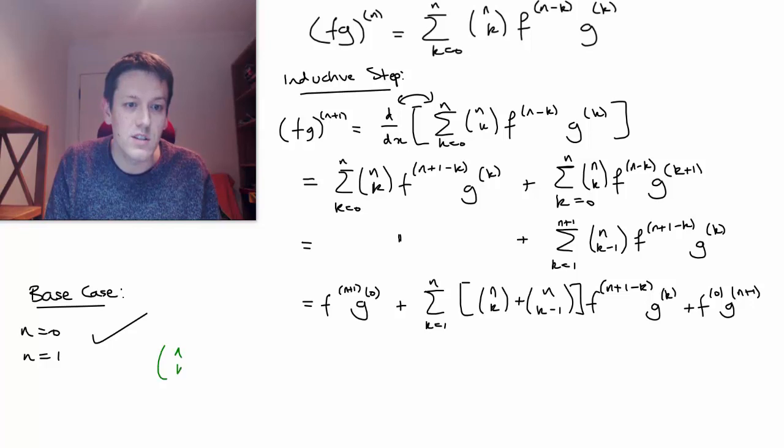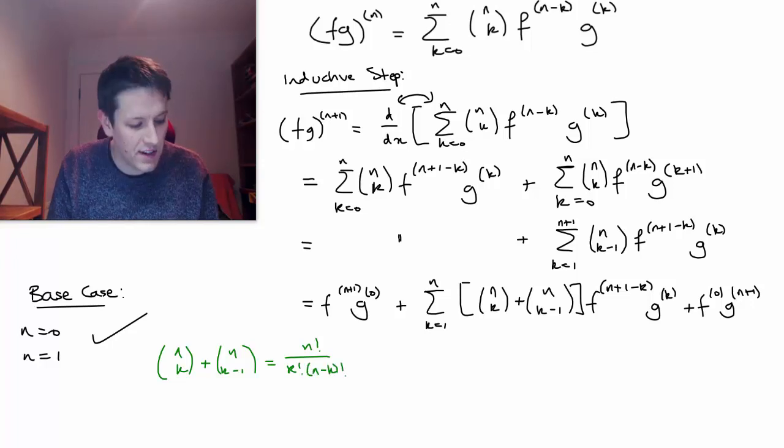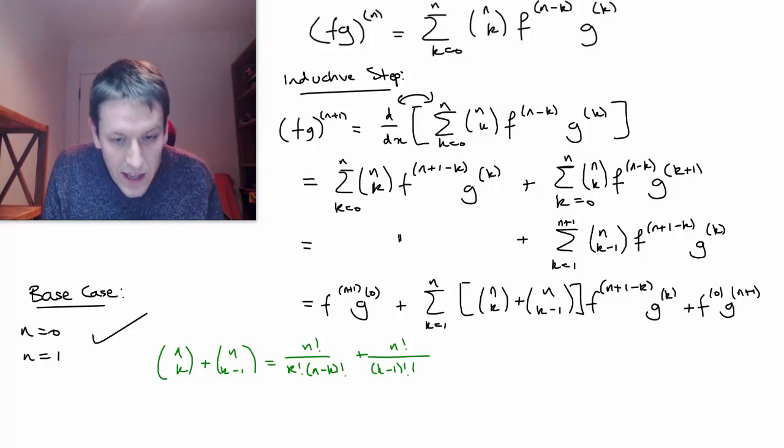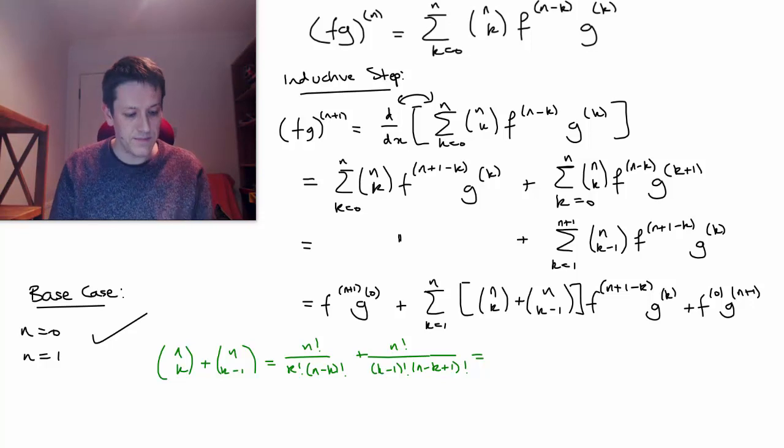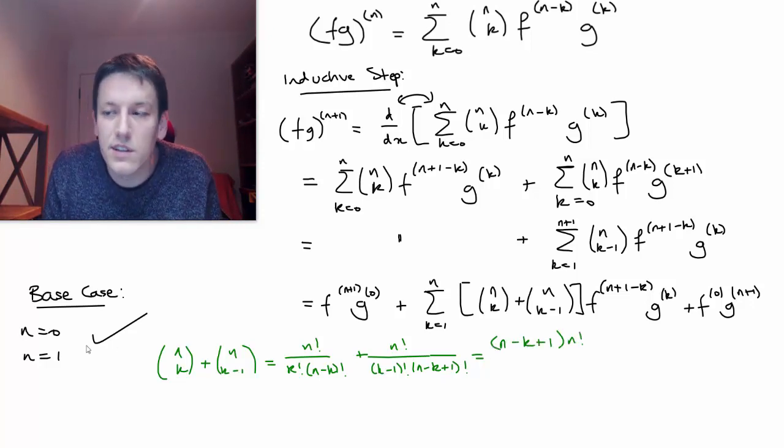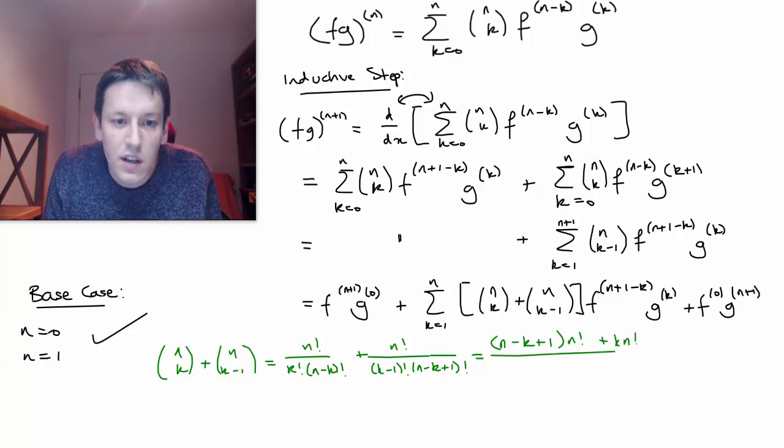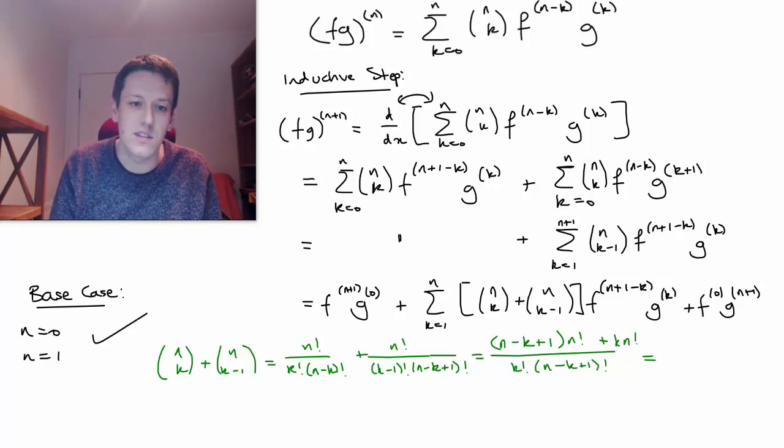Or you might like to just prove that using the factorial notation. So n choose k plus n choose (k-1), so that's n! over (k! times (n-k)!), plus n! divided by ((k-1)! multiplied by (n-k+1)!). Just using the definition of n choose r there. And if we put these over a common denominator, this first one needs an extra factor of n minus k plus 1. We multiply that by n!. And the second one here needs an extra factor of k, so I just get plus k times n!.